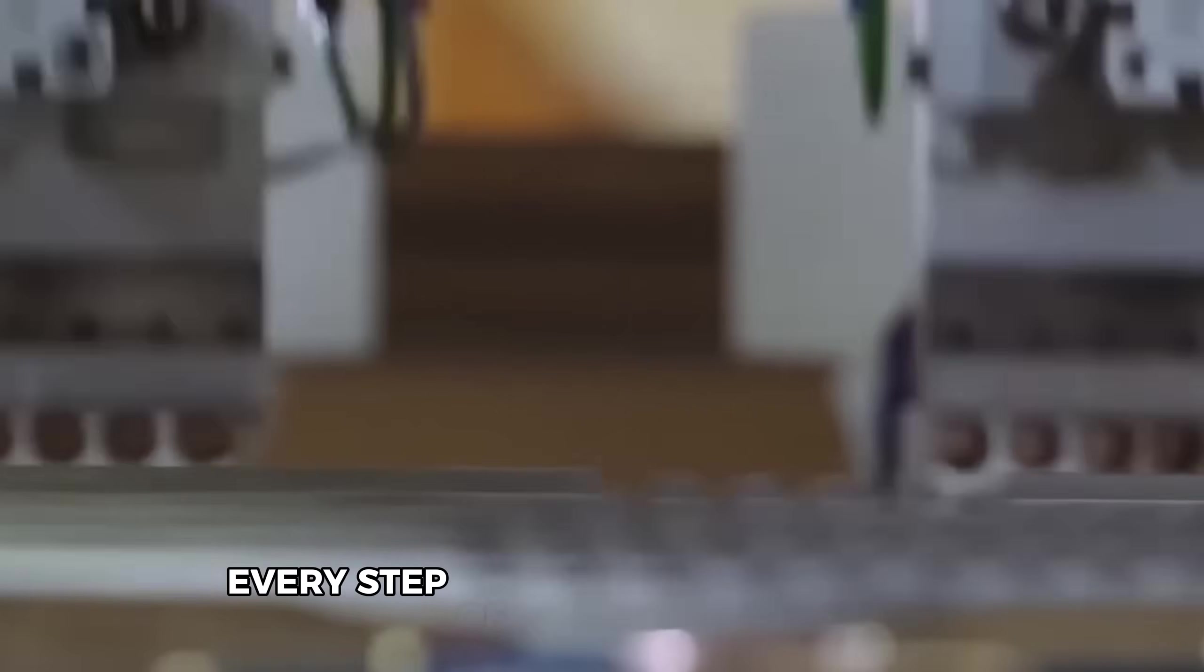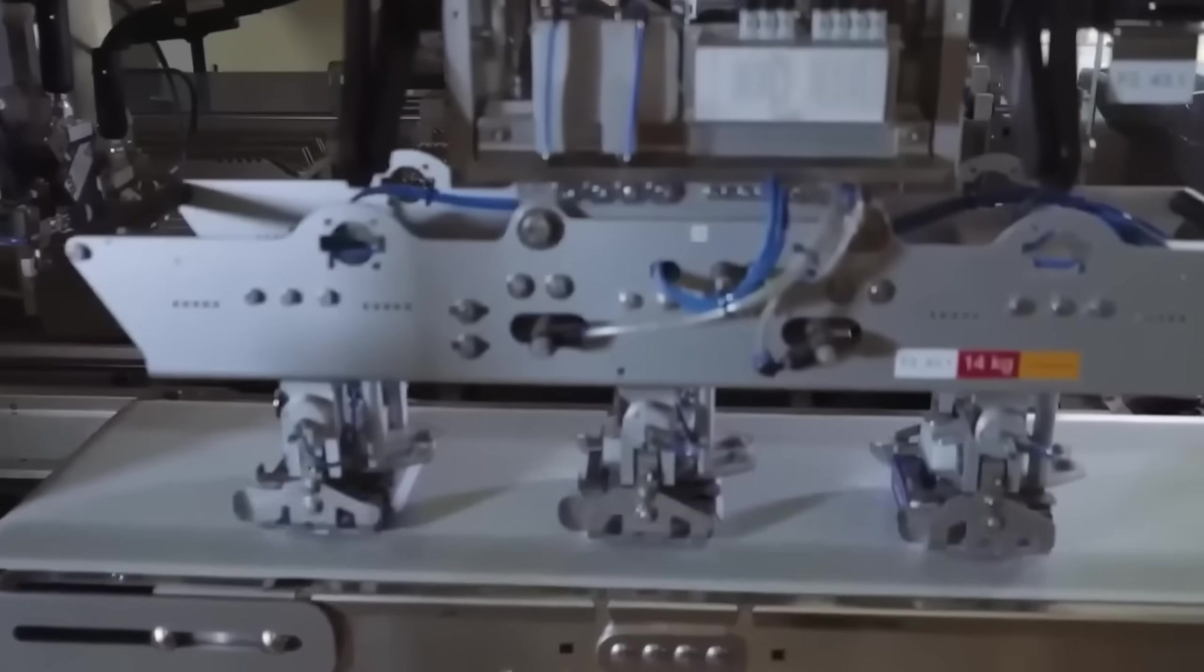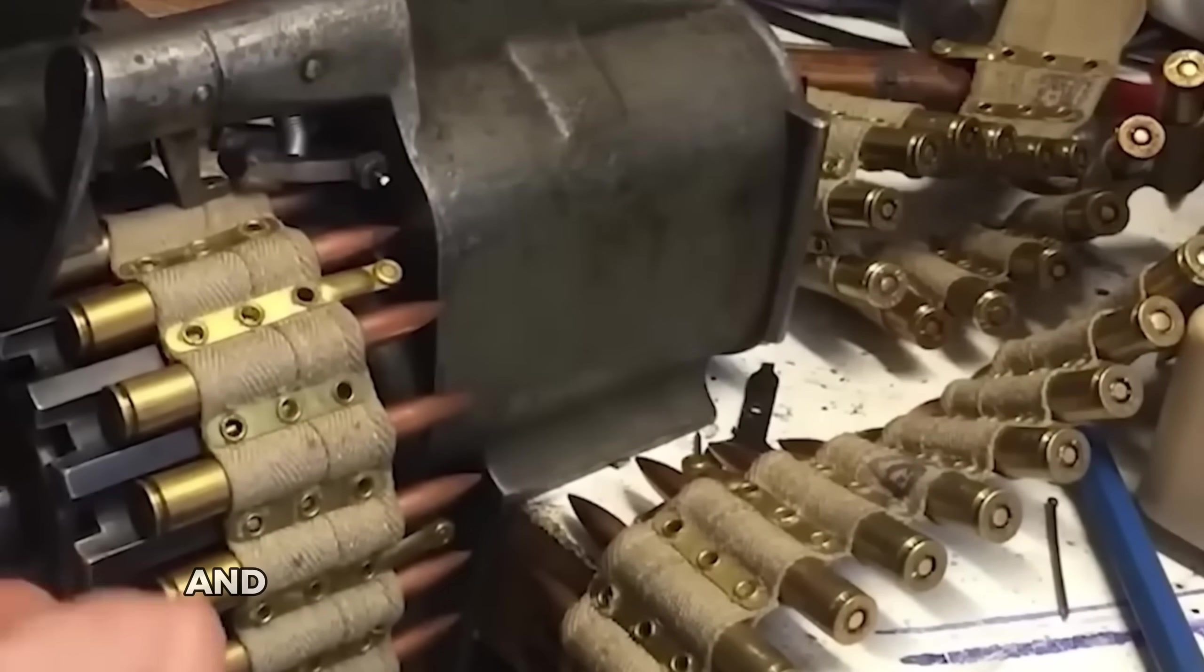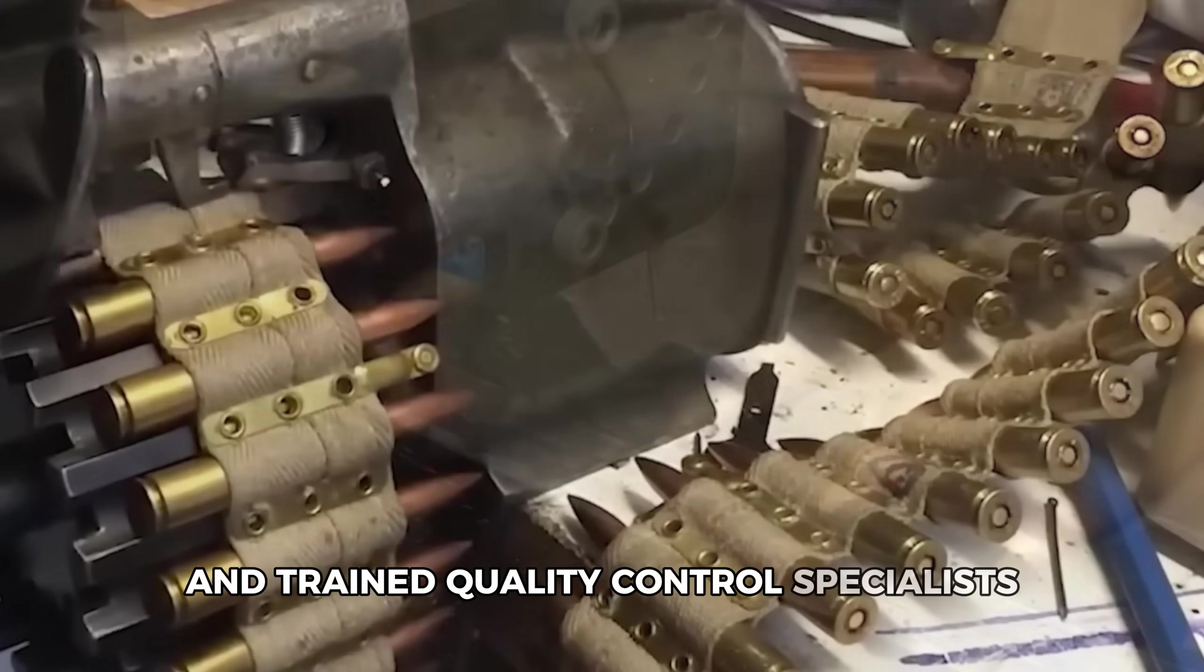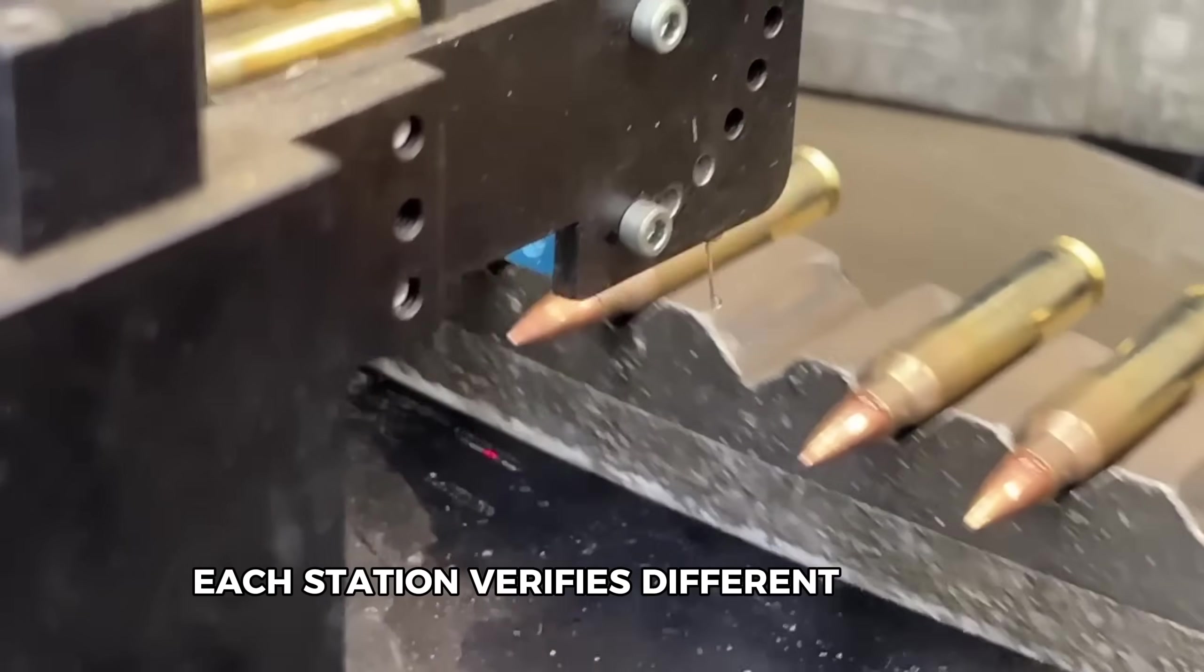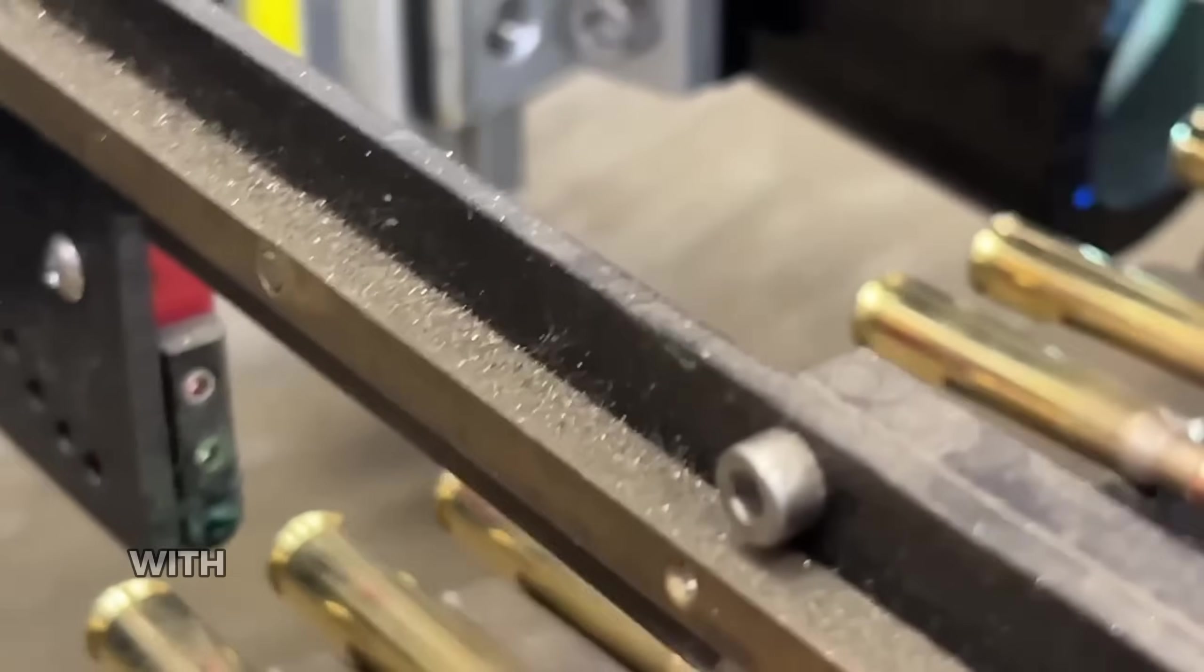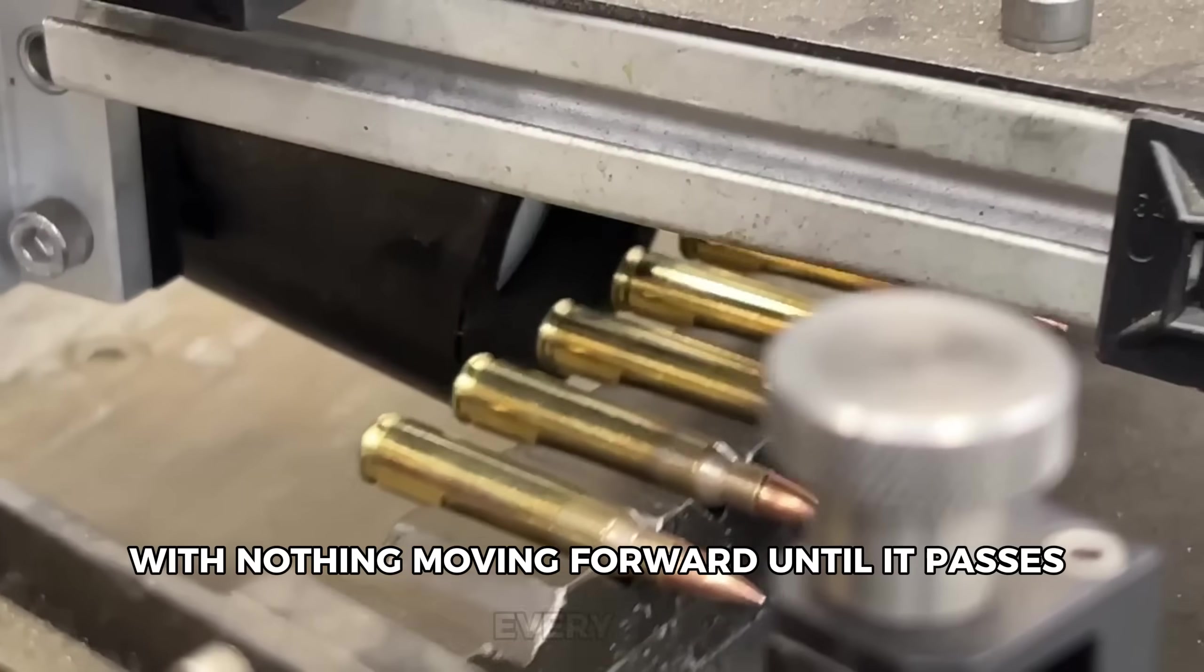Every step of this assembly process has multiple checkpoints. There are visual inspections happening both by automated cameras and trained quality control specialists. Each station verifies different aspects, from weight to dimensions to visual consistency, with nothing moving forward until it passes every test.